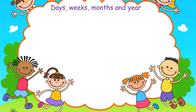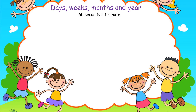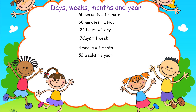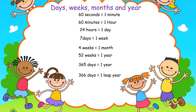Now let's do a quick revision of what we've covered and look at some things you need to know to solve any problem involving days, weeks, months, and years. We know 60 seconds makes one minute, 60 minutes makes one hour, and 24 hours makes one day. The new things to know: 7 days makes one week, 4 weeks makes one month, 52 weeks makes one year, 365 days makes one year, and 366 days makes one leap year.